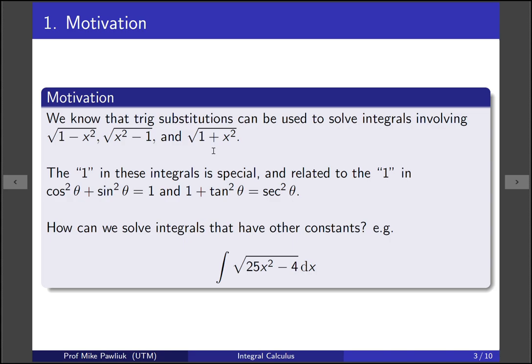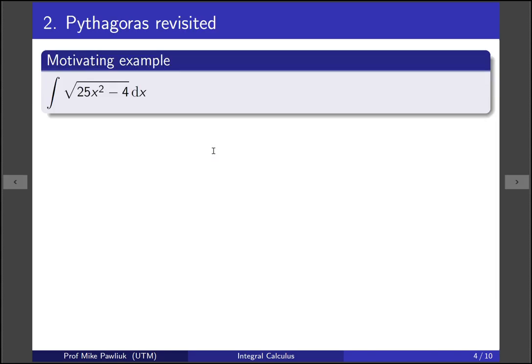So if we have an integral that has different constants, how do we adjust for that and how do we solve those ones? That's what we're going to be doing in this video. Our motivating example is going to be the integral with the square root of 25x squared minus 4.